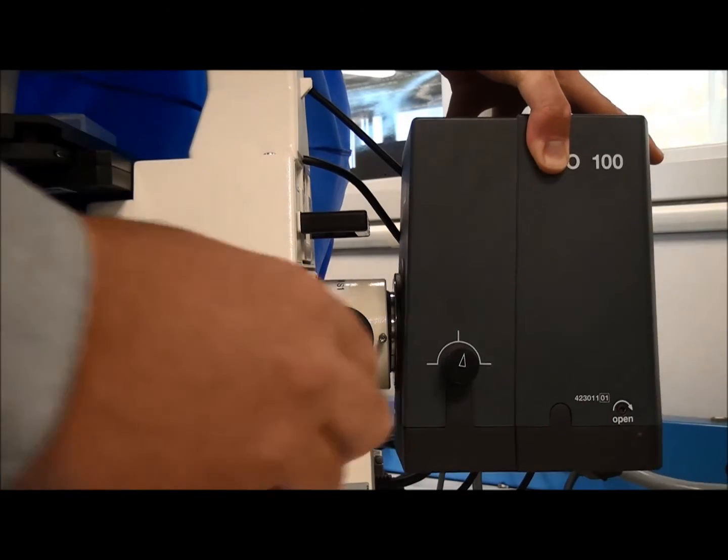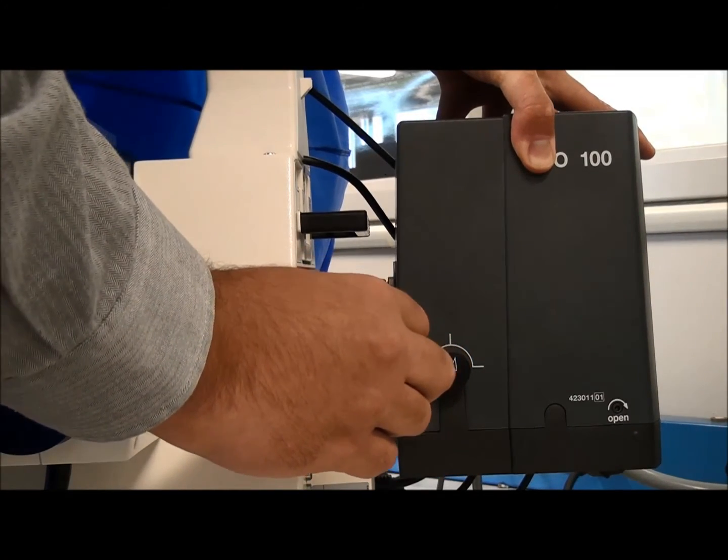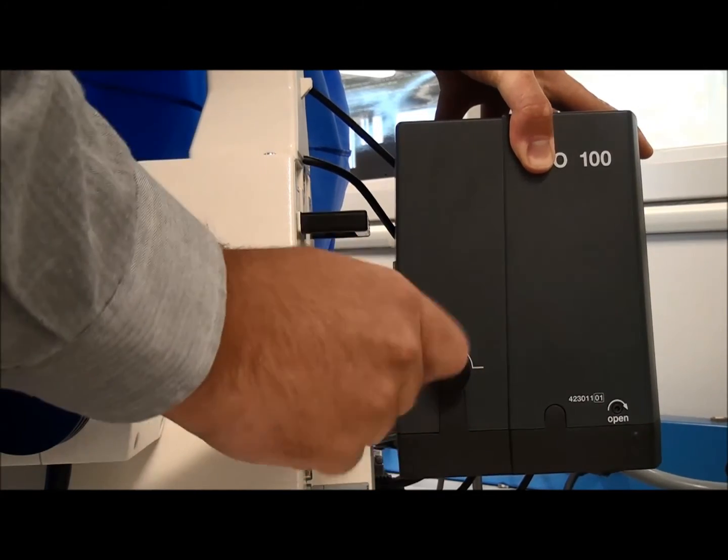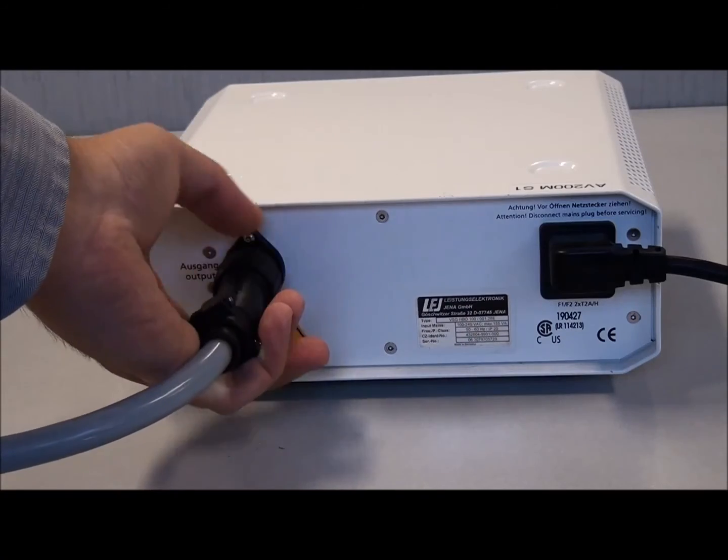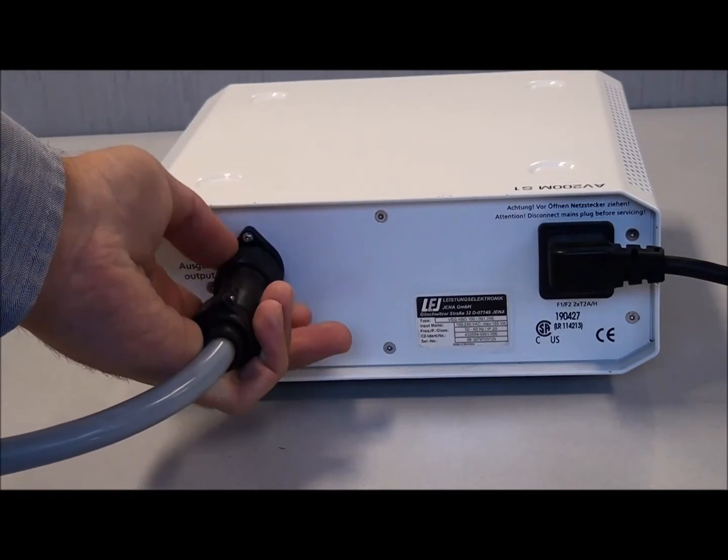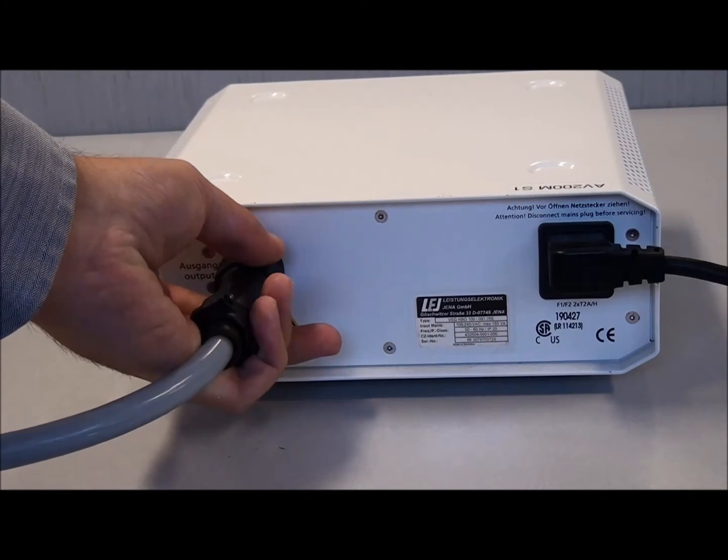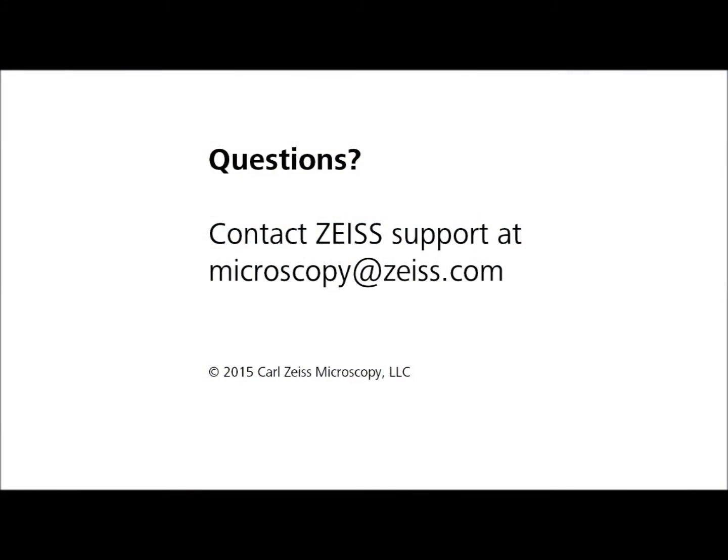Replace the lamp housing onto the back of the microscope. Reattach the power supply to the control box. Your new bulb will most likely need to be aligned. Follow the specific instructions for your lamp housing model. Contact support for more information.